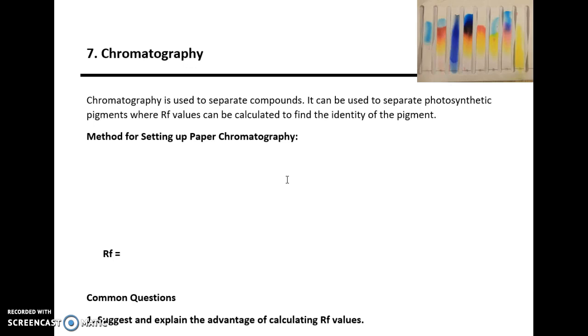They could use electrodes to separate them, in which case positively charged amino acids would move to the negative electrode and so on. Whatever context they give you, the fundamental concept is that we can work out an RF value because it's a constant ratio, compare it to known values, and it's for separating compounds.